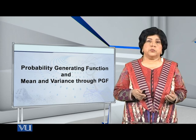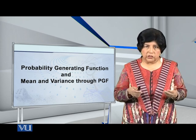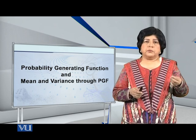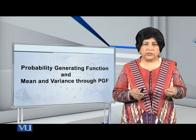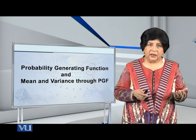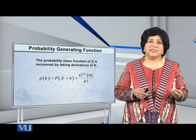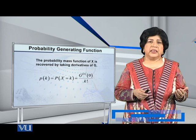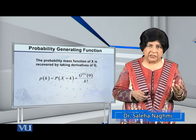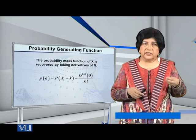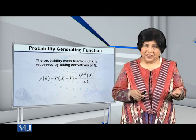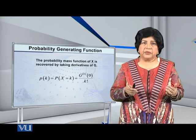The relationship between the individual probabilities and the probability generating function is as given in equation 1 that you now see on the screen. It is expressed as follows: the probability that x is equal to k is the k-th derivative of the probability generating function, evaluated by substituting z equal to 0, and then dividing by k factorial.